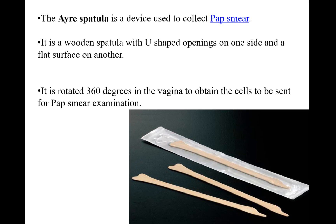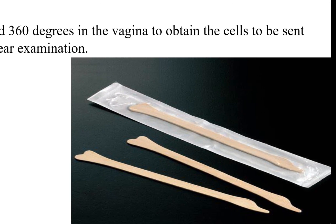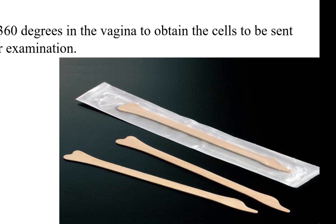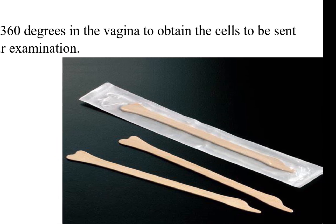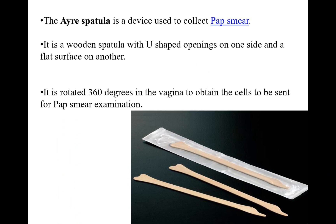This is an Ayre's spatula, a device used to collect a Pap smear. You can see the U-shaped edge and the flat edge. We rotate it 360 degrees in the vagina to obtain cells. Two slides are made: one for Giemsa stain and one for Papanicolaou stain, and we see the morphology of the cervical cells.